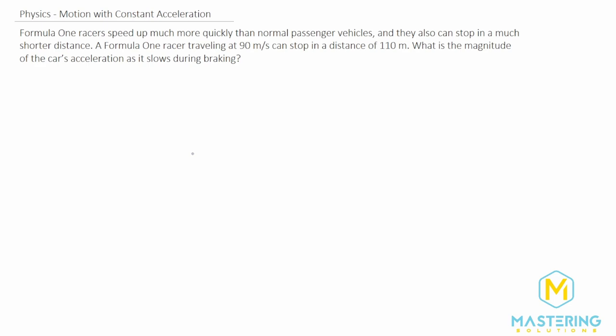In this question, they tell us that Formula One racers speed way faster than normal cars, and they stop much faster as well. They give us some information: it's traveling at 90 meters per second, and it can stop in this many meters. They want us to know what is the acceleration as it slows, or deceleration.